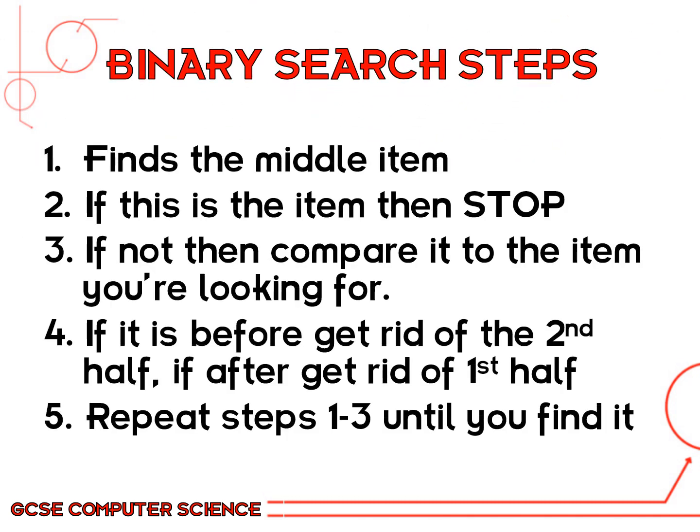The binary search steps are a little bit more complicated. In your ordered list, you find the middle item. If that middle item is what you're looking for, then you would stop the search. If it's not, you have to compare that middle item to what you're looking for. If your item is before the item that you're looking for in the list, then you get rid of the whole second half of the list; if it's after, then you can get rid of the whole first half of the list. And you basically keep repeating steps one to three until you get to your item.